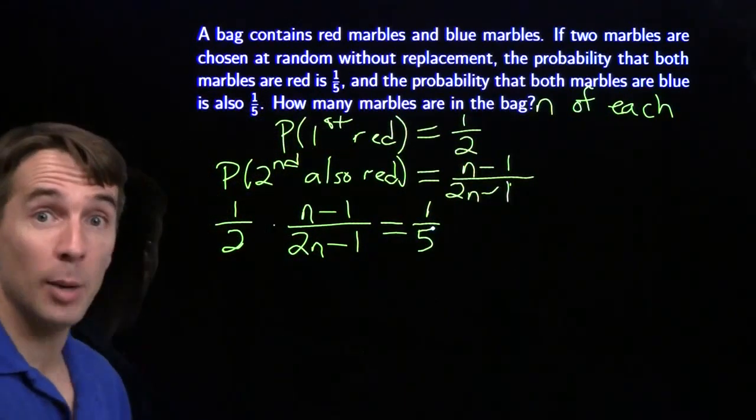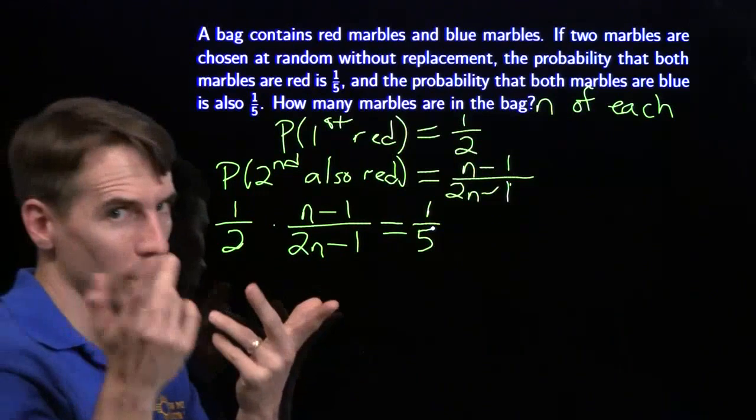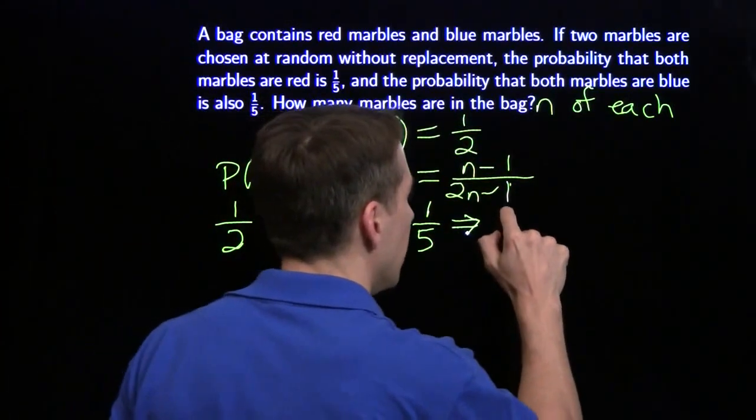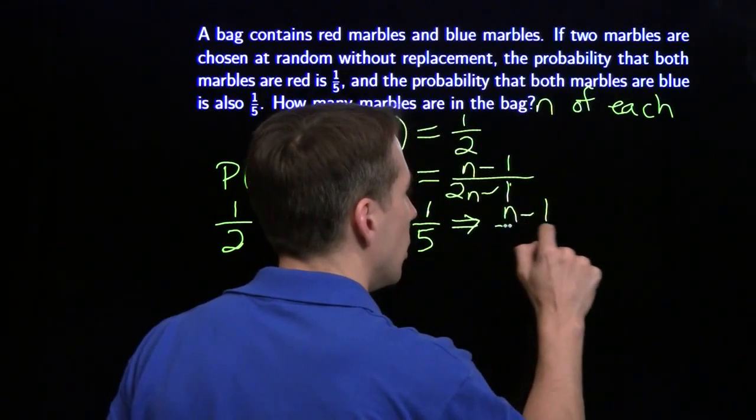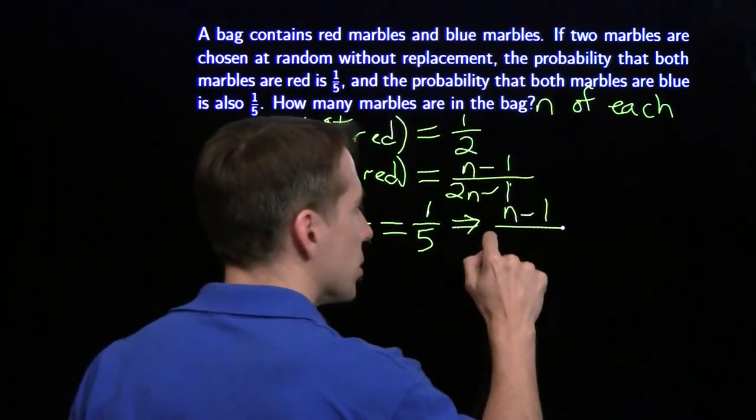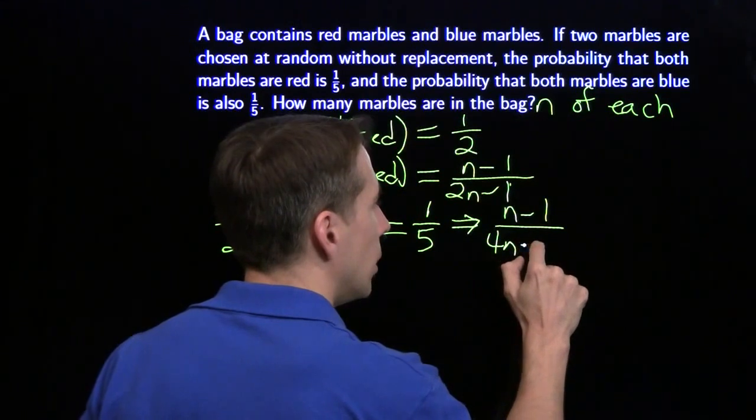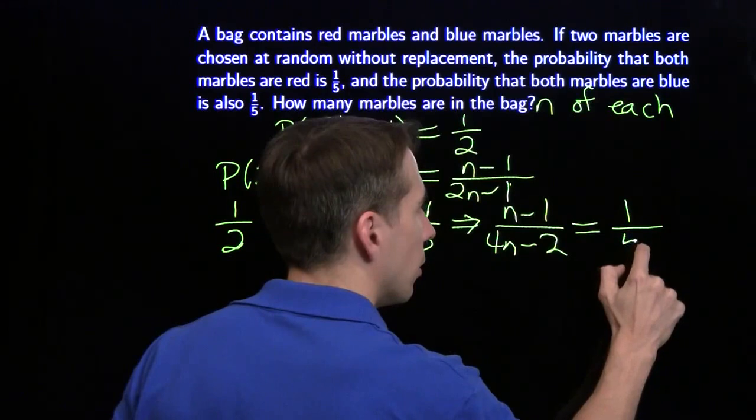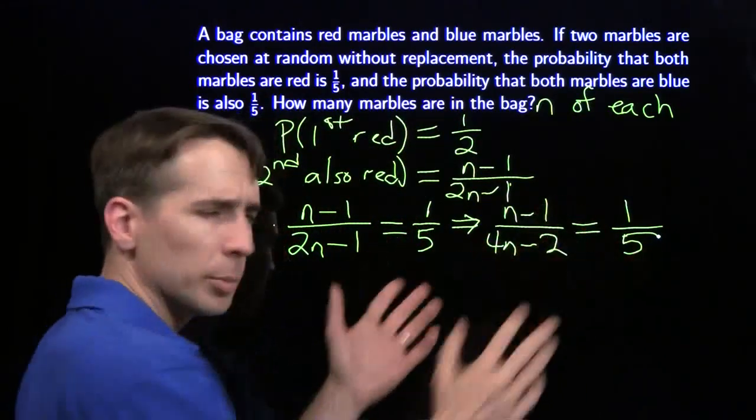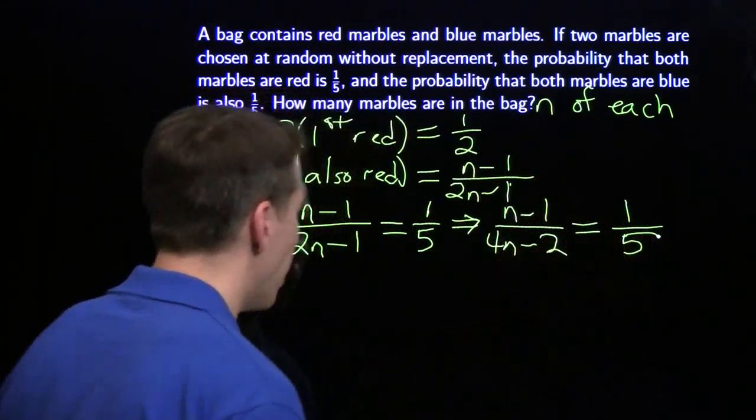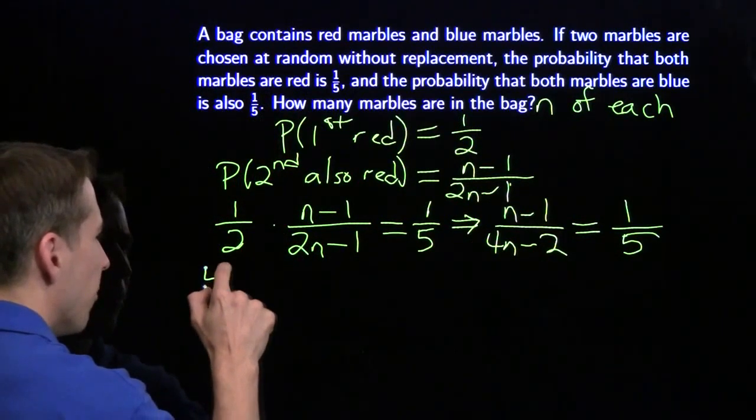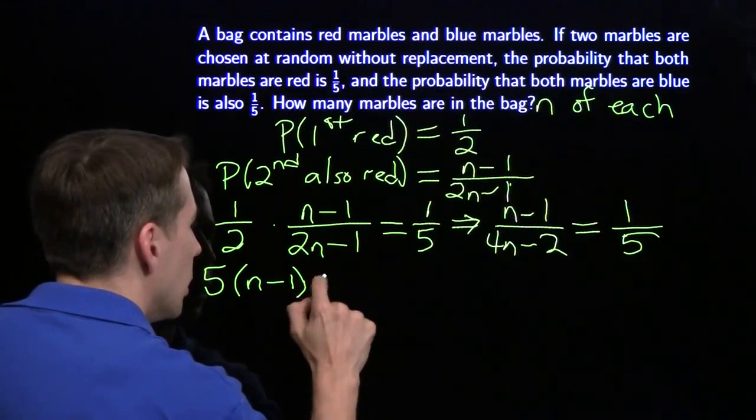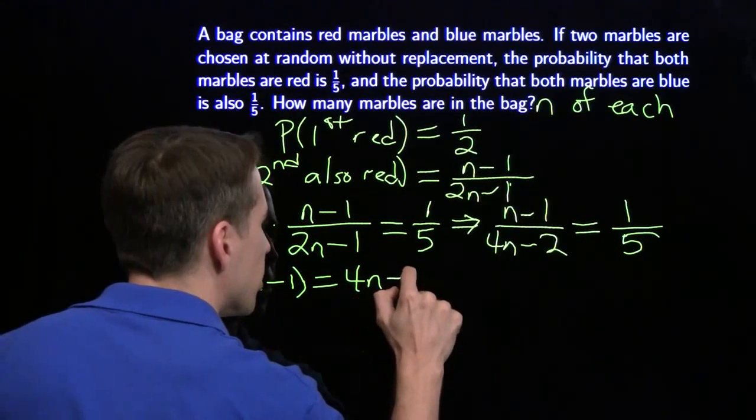Now that we have an equation, it's algebra time, and we're going to solve this equation one step at a time. First step, multiply these two fractions, I'm going to have n minus 1 over 4n minus 2, and we know that this has to equal one-fifth. Now clean this up, get rid of the fractions, I'm going to multiply both sides by 4n minus 2, and multiply both sides by 5, I'm going to have 5 times n minus 1 equals 4n minus 2.